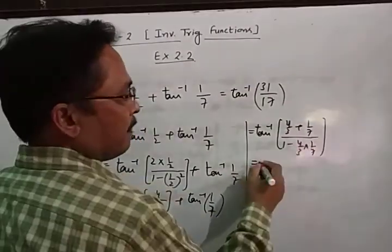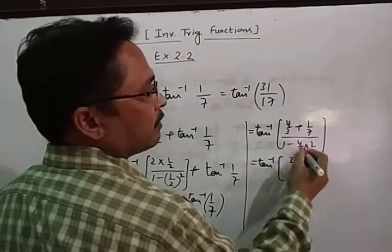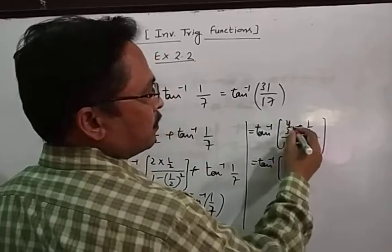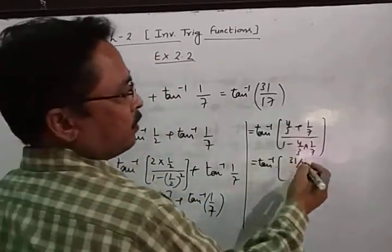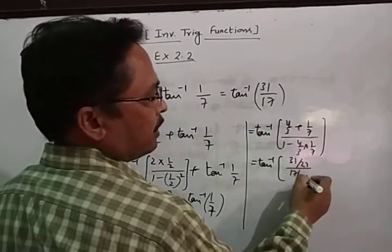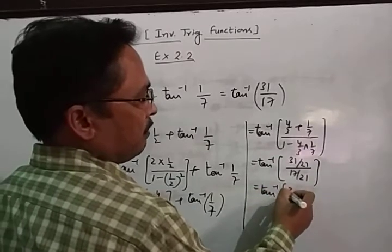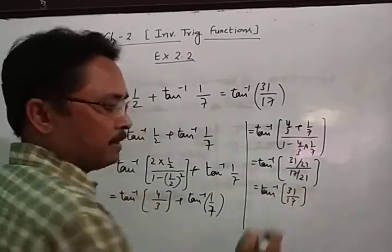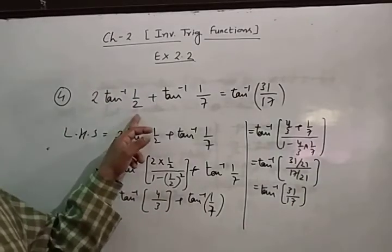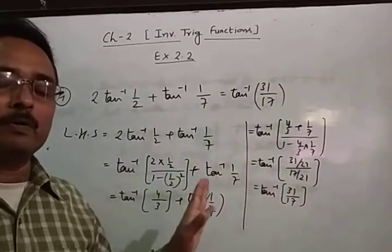Here xy is the product of 4/3 and 1/7. After simplification, the numerator gives 28 + 3 = 31, and the denominator gives 21 − 4 = 17, so we get tan⁻¹(31/17). The 21 cancels out, leaving 31/17. In this way, we have proved that 2tan⁻¹(1/2) + tan⁻¹(1/7) = tan⁻¹(31/17).